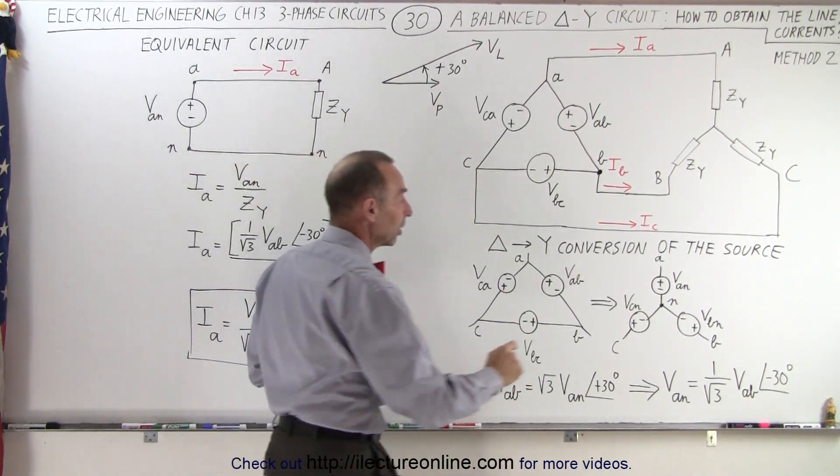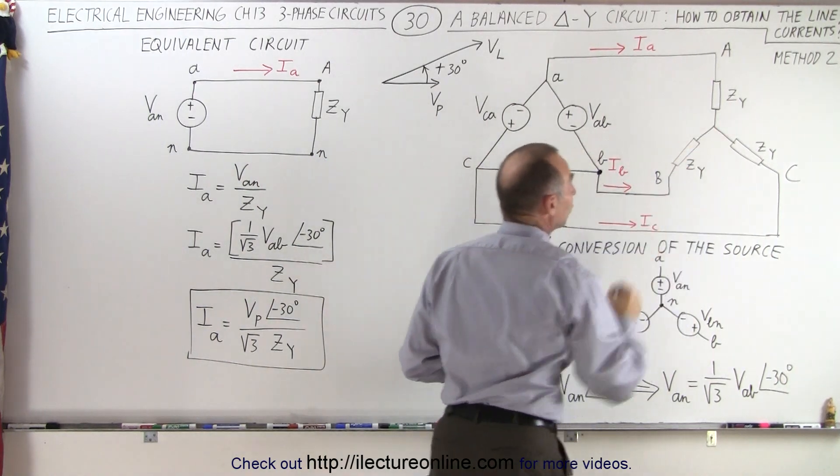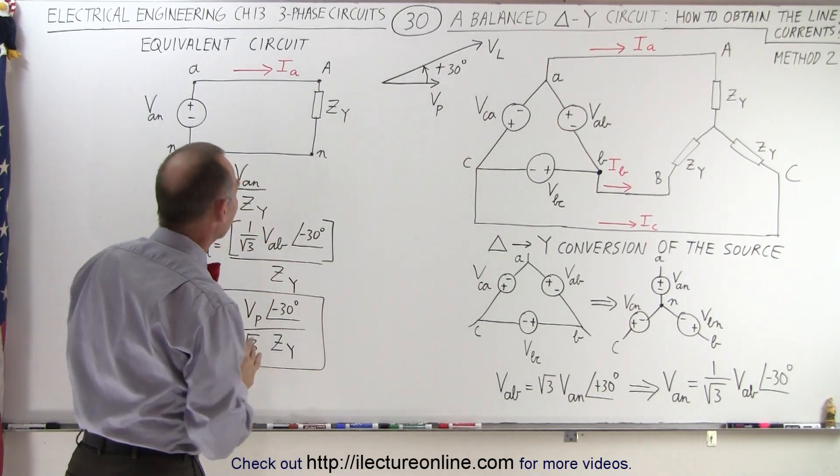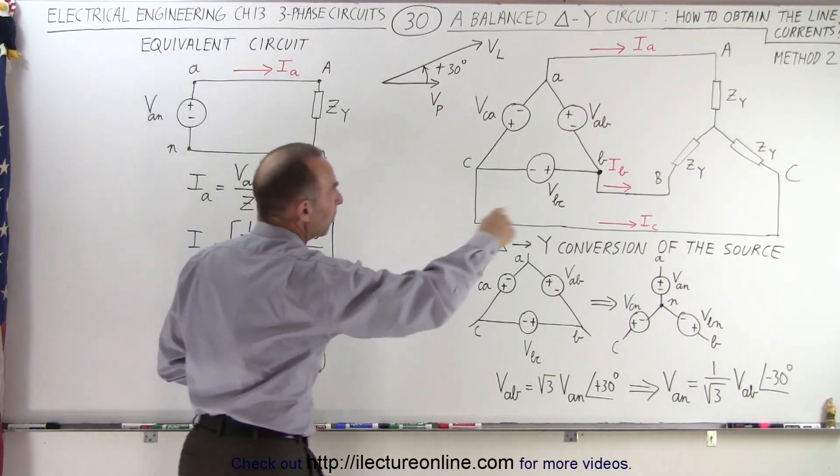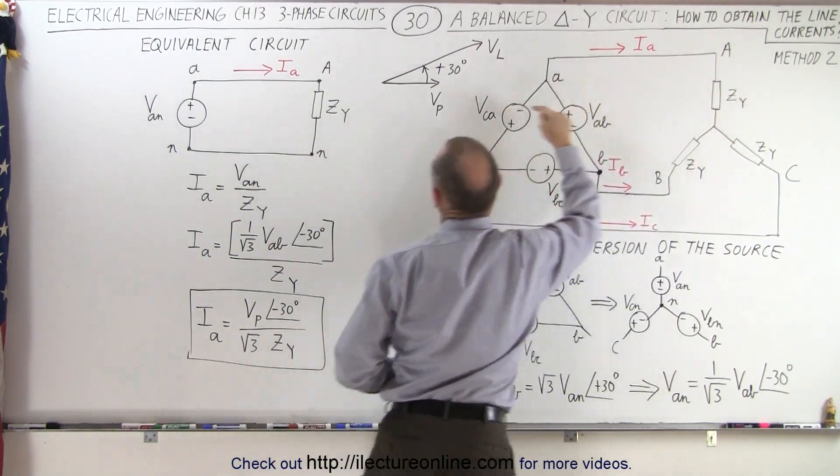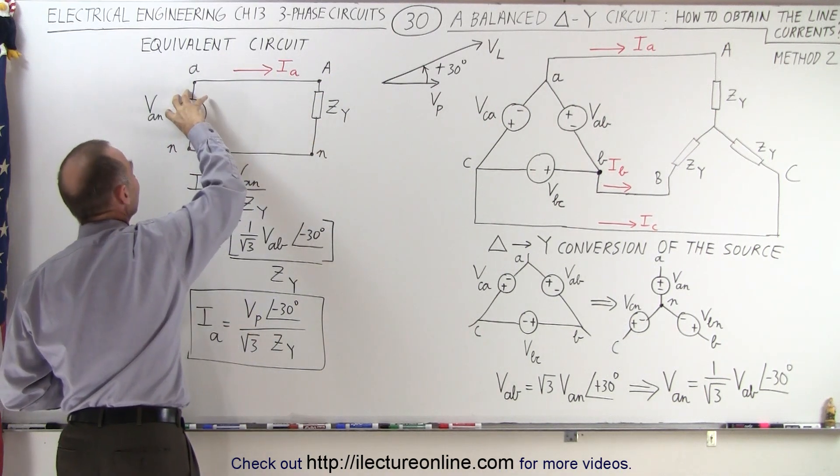So now what we can do is we can connect the neutral of the source to the neutral of the load, since the load is also in a Y configuration. And then if we take the top portion of that, we can see, so we take the top portion of this and the top portion of that, we can then have an equivalent circuit that just has the voltage here, VAn...